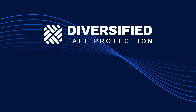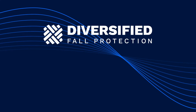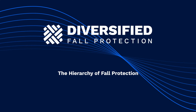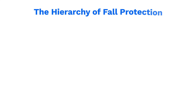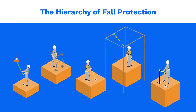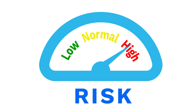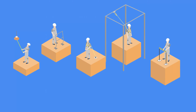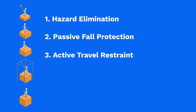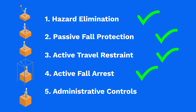Ensuring worker safety is critical in any workplace environment, and effective fall protection strategies are vital in achieving this goal. One of these strategies is known as the hierarchy of fall protection, a multi-tiered approach used to maximize safety in environments where falls are a risk. The hierarchy is structured to prioritize methods that completely eliminate risk over those that minimize them, providing a step-by-step guide for assessing and managing fall hazards.